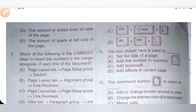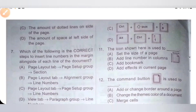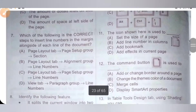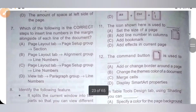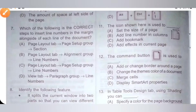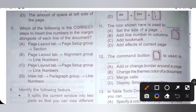Eleventh question: the icon shown here is used to do what? Option A: set the size of a page. B: add line number in column. C: add bookmark. D: add effects in the current page. The icon is used to set the size of a page. Option A is the correct answer.